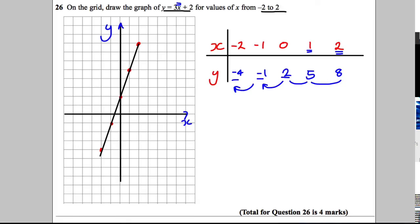Also, you could note, if you know your form of graph, this is the graph y equals 3x add 2. We know that the graph will cross the y-axis at (0, 2). And indeed it does. And we know this 3 is telling us the gradient 3. So you go across 1, you must go up 3. Across 1, up 3. That's another way of doing that question.